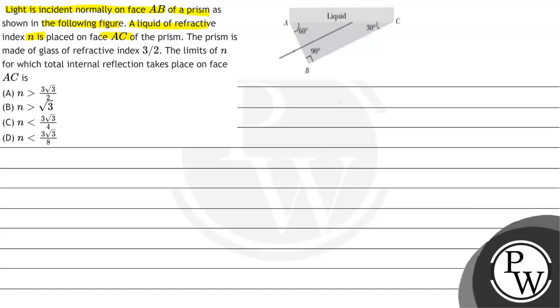The prism is made of glass of refractive index 3 by 2. The limits of n for which total internal reflection takes place on face AC is.